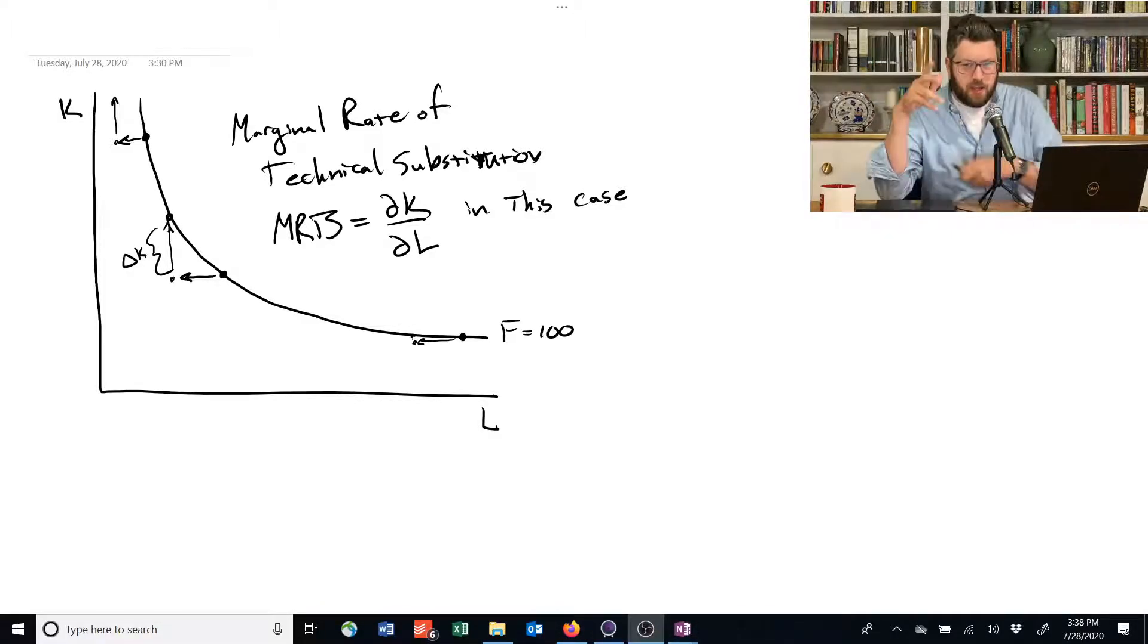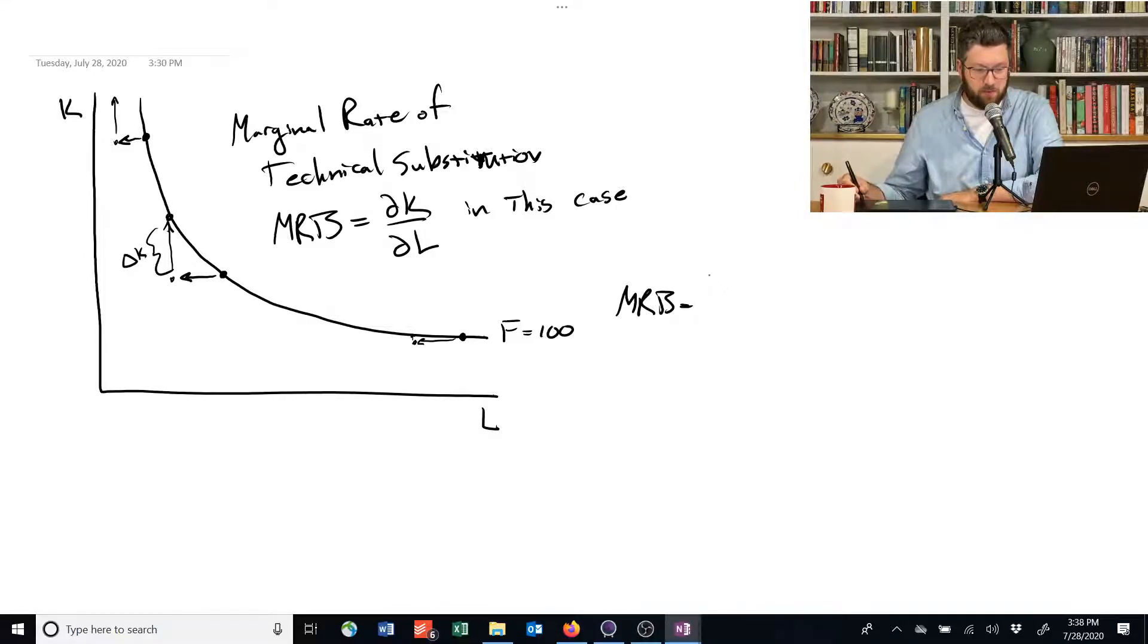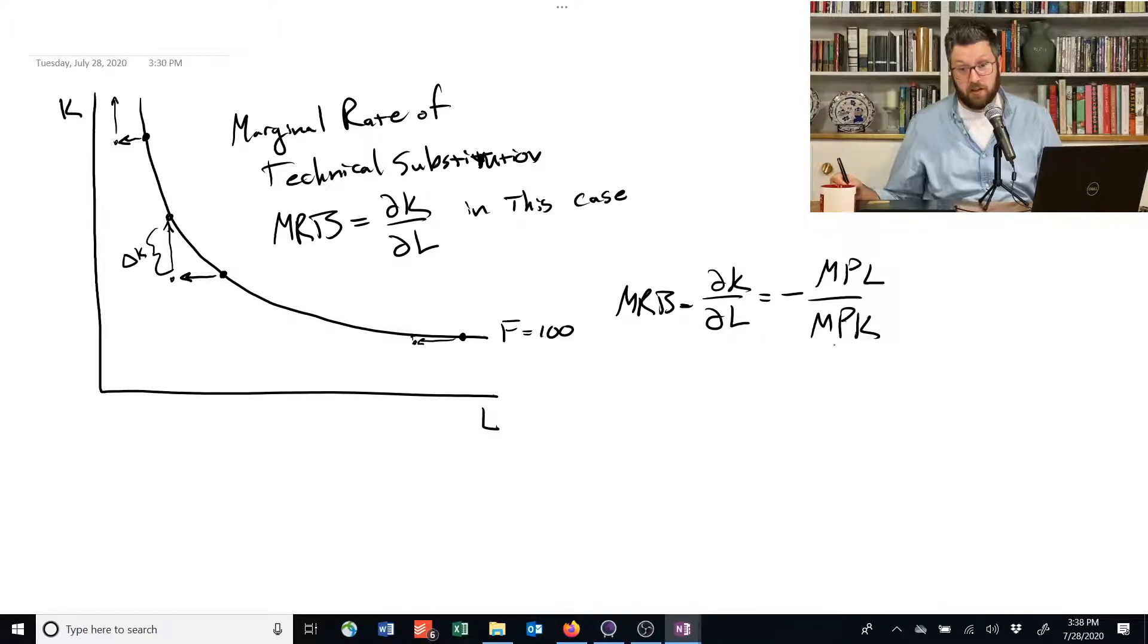Now, it turns out that the marginal rate of technical substitution is closely linked to two other concepts we've already discussed. The marginal rate of technical substitution, in this particular case, is equal to negative marginal product of labor divided by marginal product of capital.